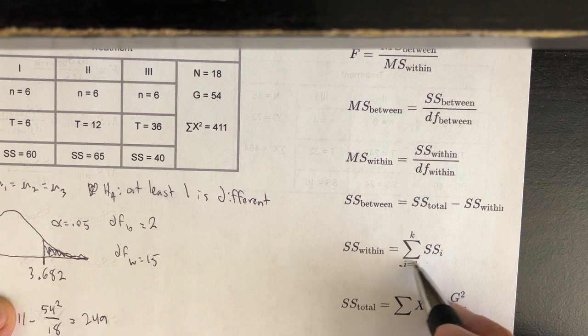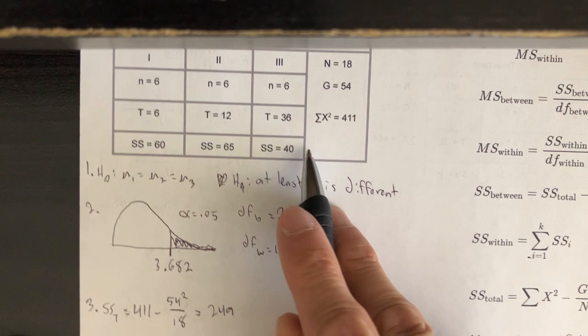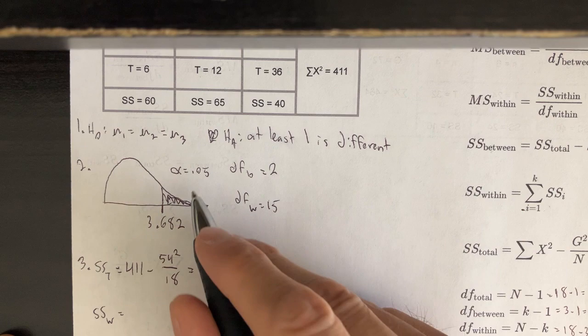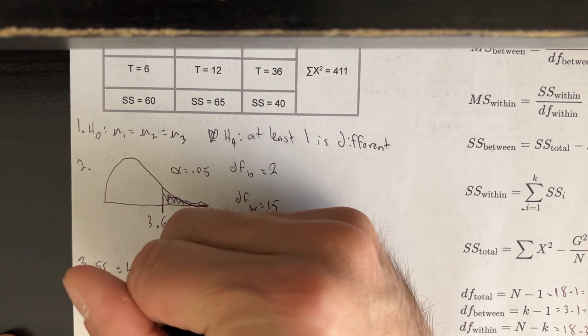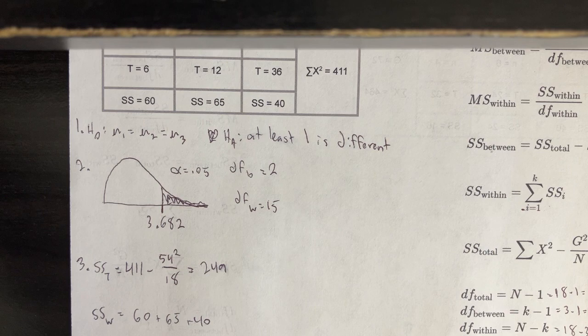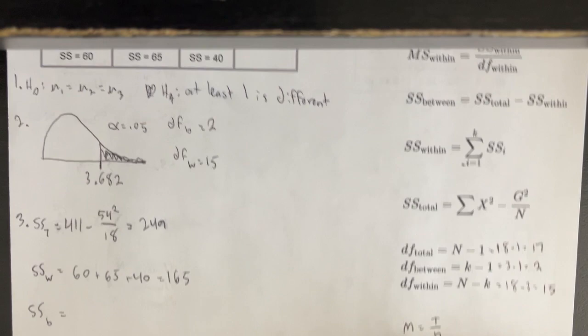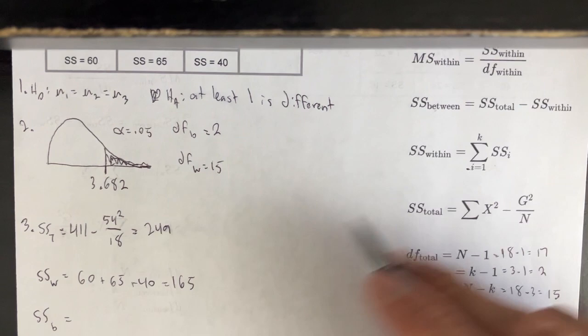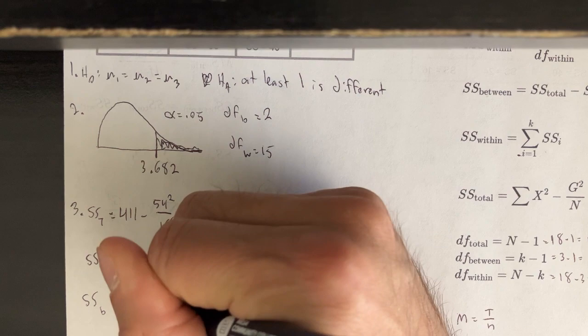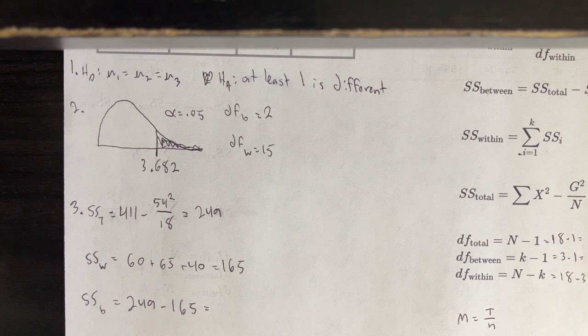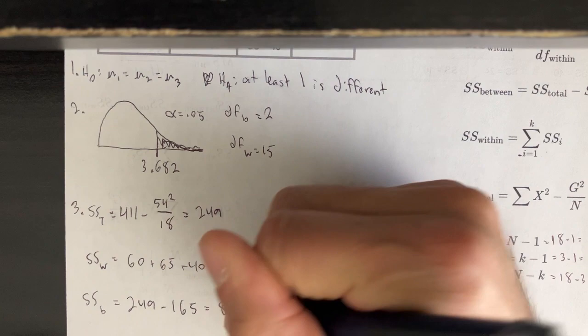Now we do the sum of squares within — this simply means adding the sum of squares for each group from the table: 60 plus 65 plus 40, which gives us 165. Then for the sum of squares between, we take the difference between SS total and SS within: 249 minus 165 equals 84.